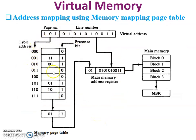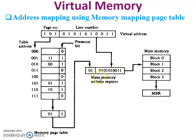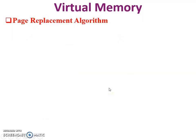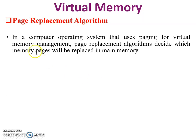Here is an example of address mapping using a memory mapping page table. The virtual address has a page number and a line number. The page number is looked up in the page table — for example, page 101 maps to frame 01. The presence bit: if it is 1, the page is active; if 0, it is inactive. The frame address 01 goes into the main memory address register, and combined with the line number, the data is fetched from main memory and given to the CPU.